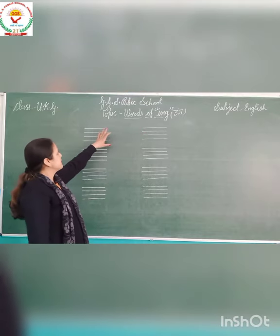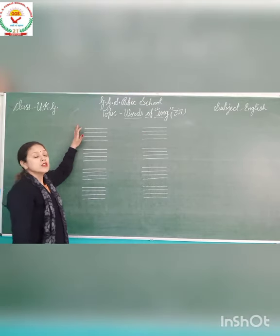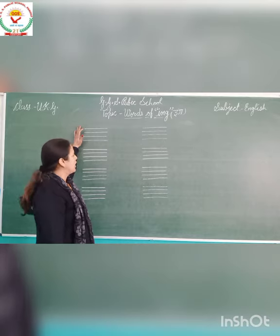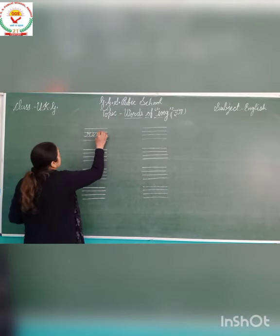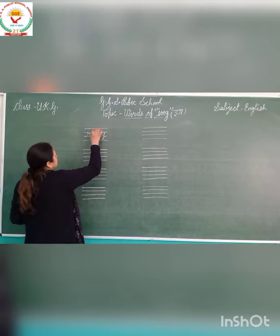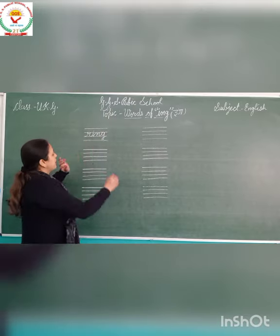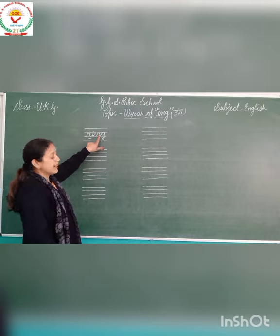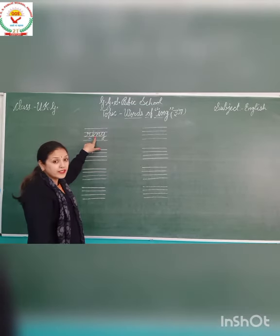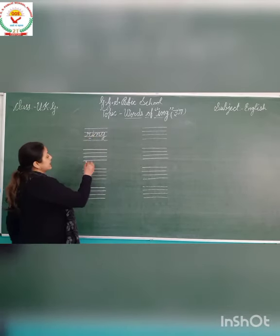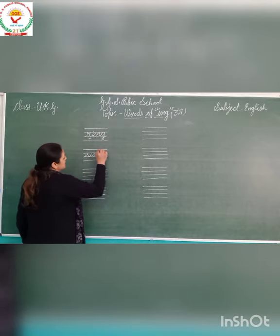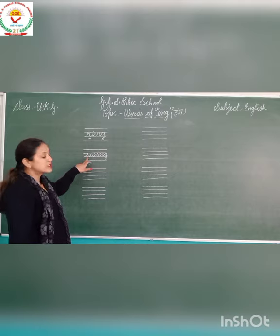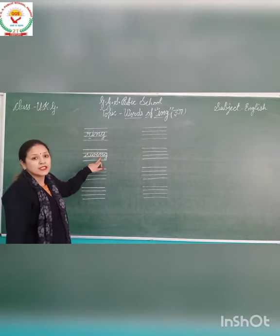Let's practice some words that make the 'ing' sound. Ring — r-ing. Swing — swing.